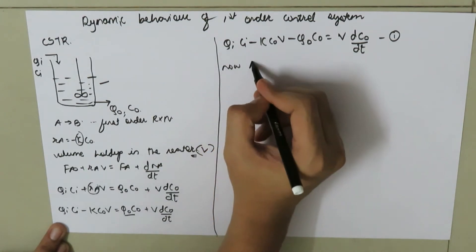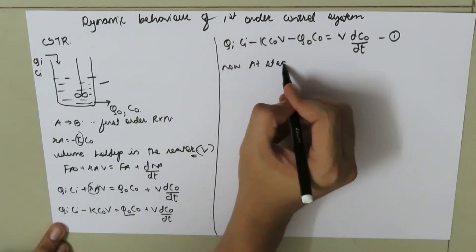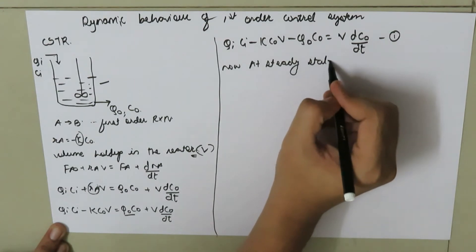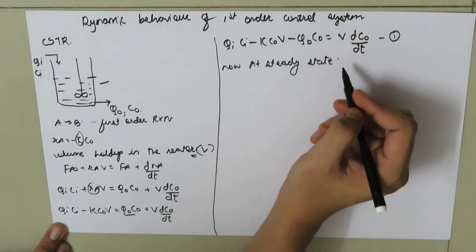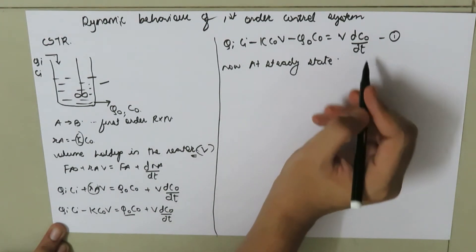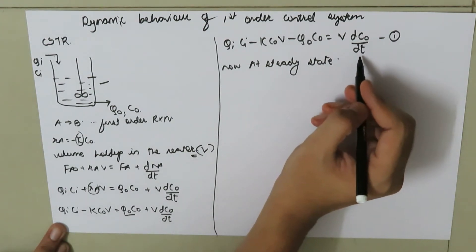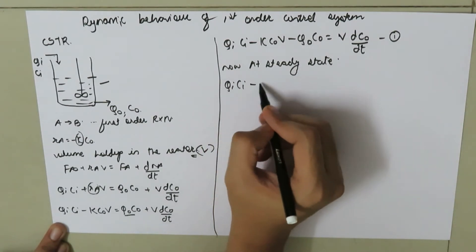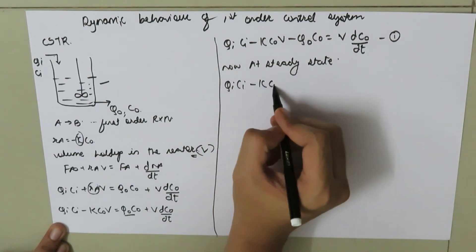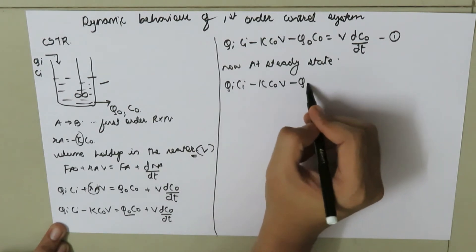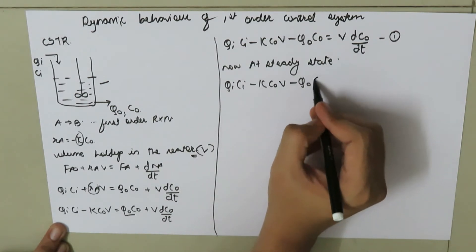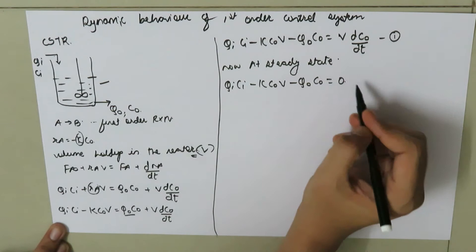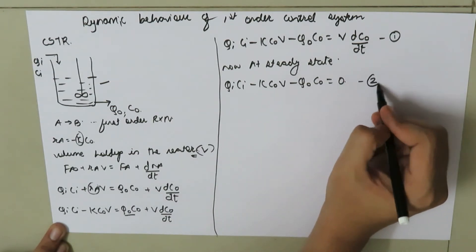At steady state, the change in concentration with respect to time is zero. So: QI times CI minus K times COS times V minus QO times COS equals zero. We call this equation number two.